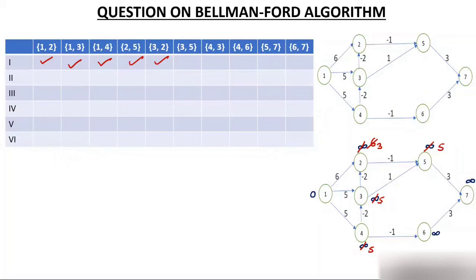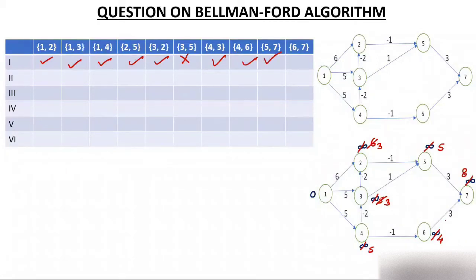Relax edge 3-5: node 3 is 5, edge weight is 1, so 5 plus 1 is 6. Is 6 less than 5? No — do not relax. Relax edge 4-3: node 4 is 5, edge weight is -2, so 5 plus -2 is 3. Is 3 less than 5? Yes — node 3 becomes 3. Relax edge 4-6: node 4 is 5, edge weight is -1, so 5 plus -1 is 4. Is 4 less than infinity? Yes — node 6 becomes 4. Relax edge 5-7: node 5 is 5, edge weight is 3, so 5 plus 3 is 8 — node 7 becomes 8. Relax edge 6-7: node 6 is 4, edge weight is 3, so 4 plus 3 is 7. Is 7 less than 8? Yes — node 7 becomes 7.